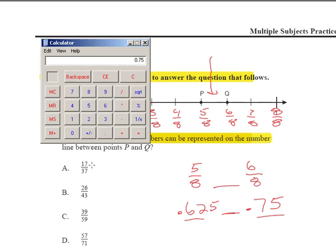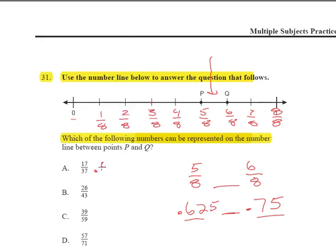Convert it to a decimal. Take 17, I just cleared it. 17 divided by 37 is going to give you, wow, look at that number. 0.459 dot, dot, dot. That's easy. Just round it to like 0.46. You can do that. Now does 0.46 fall between 0.625 and 0.75? No. Obviously it doesn't. So let's do the next one.